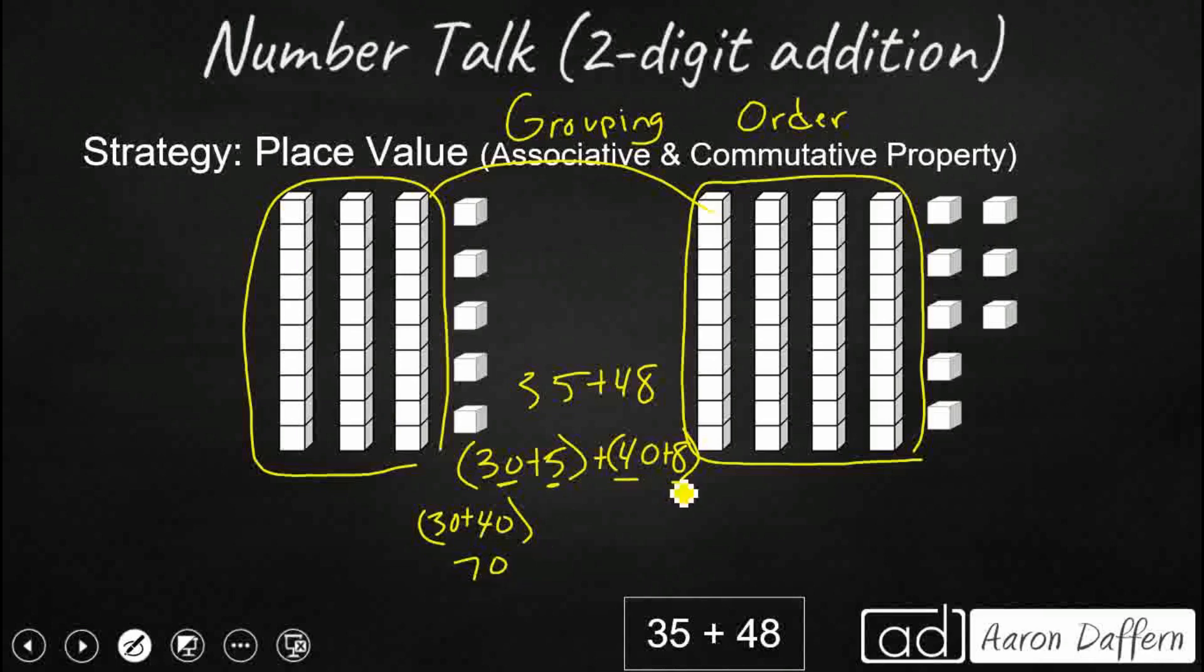Now I've got my five and my eight left over. Five and eight left over. That's 13. So I've got 70 and 13. No regrouping necessary. I can add those together and I'm going to get my, as always, 83.